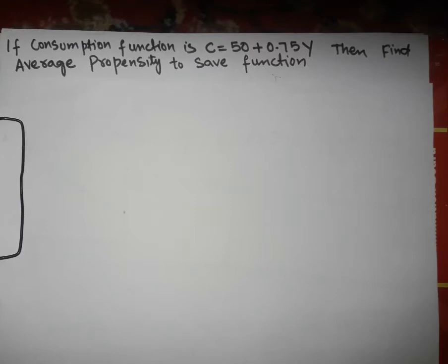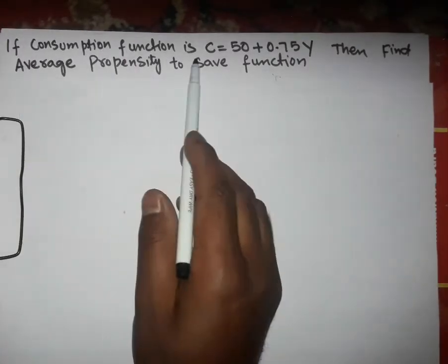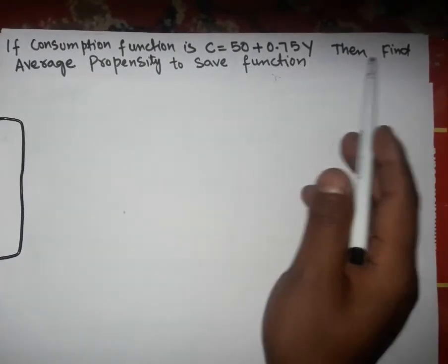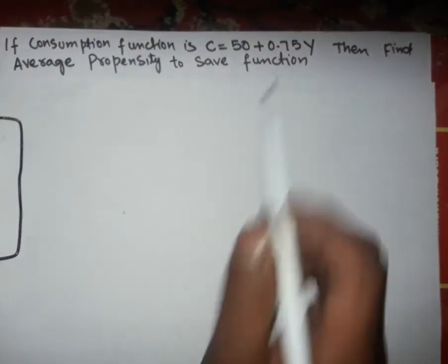Hi, this is Halal. In this video, we will find the average propensity to save function from the given consumption function. The question is: if the consumption function is C equals 50 plus 0.75Y, then find the average propensity to save function.